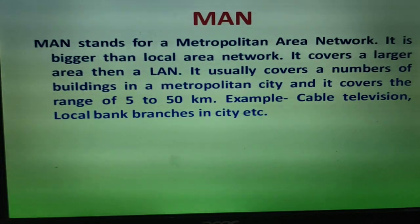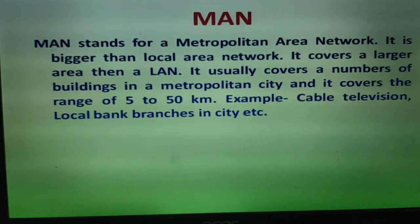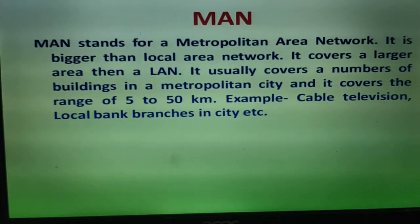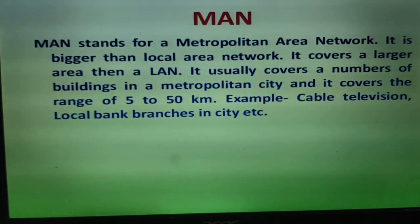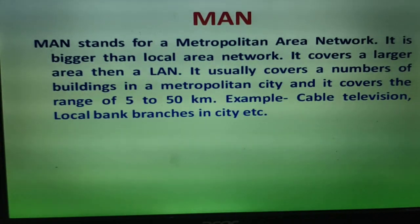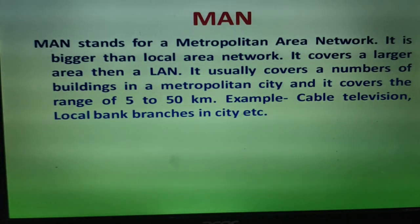The Metropolitan Area Network covers a range of 5 to 50 kilometers — essentially a whole city where computers are connected together. A good example is a cable television network: the main center is in the city but the cable covers many kilometers. Another example is local bank branches — if there are 10 branches of the same bank in a city, all their computers are connected, making it a Metropolitan Area Network.